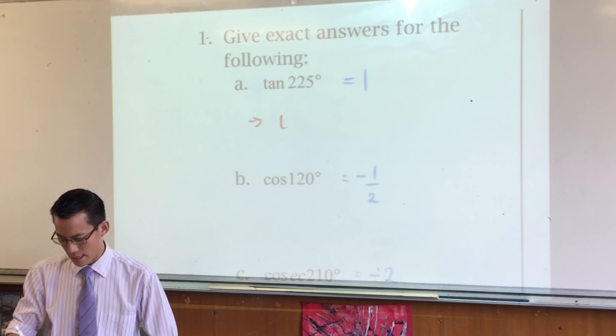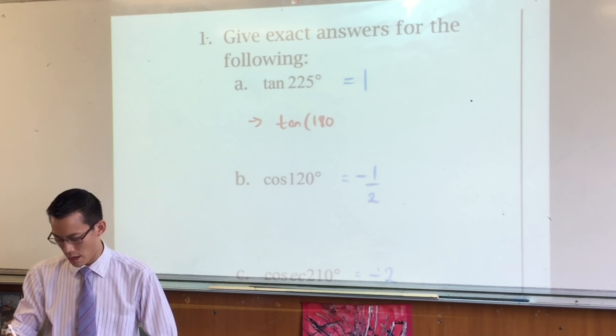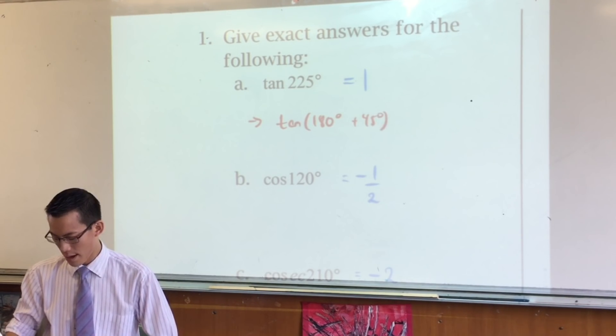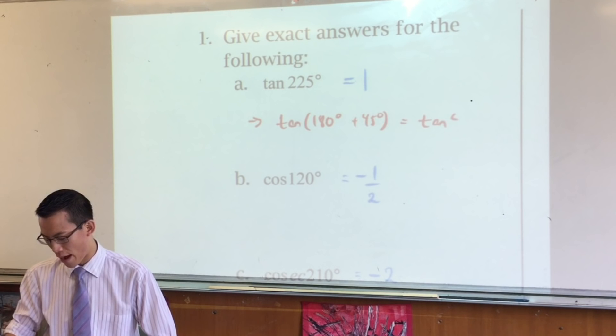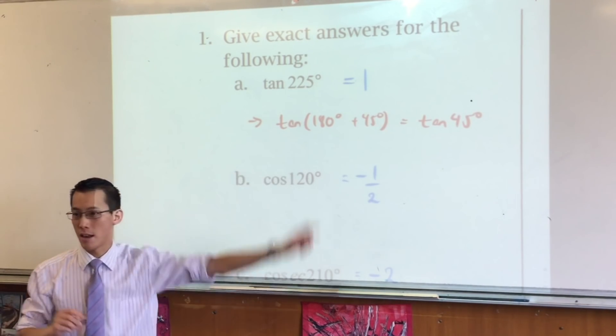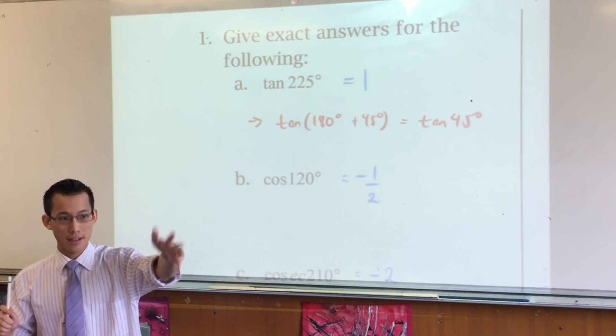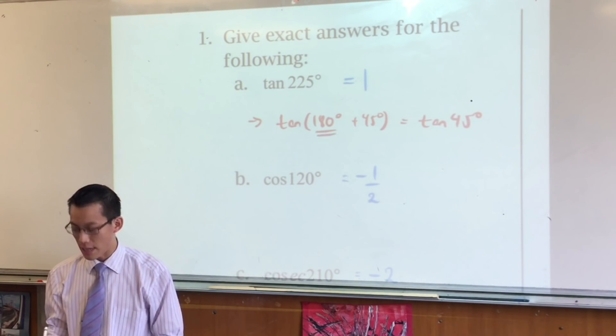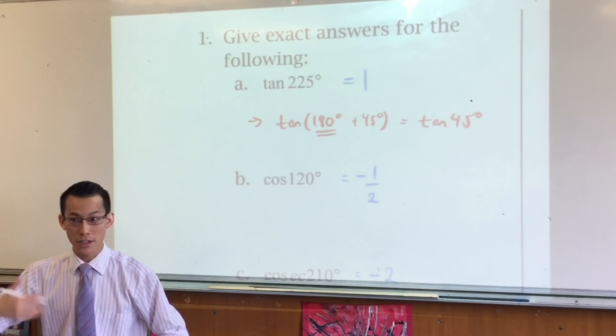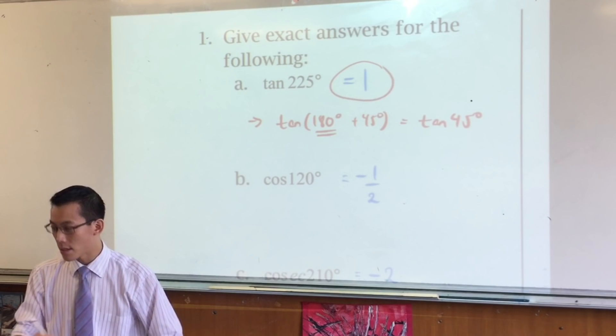I could say that that's tan of 180 degrees plus 45 degrees, and so that's tan of 45. Why is that, by the way? Why is that equal to that? Because the period of tan is 180 degrees. Thank you, so every 180 degrees you're getting the same value over and over again, and you know what tan 45 is? It's 1.